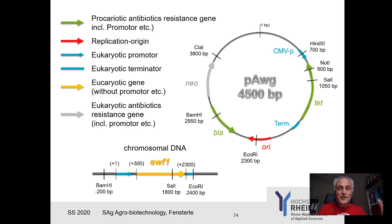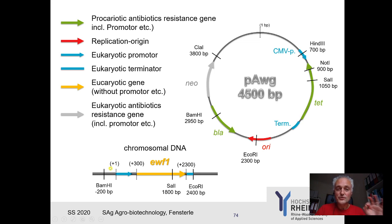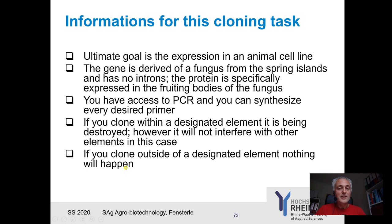People usually start thinking about which restriction enzyme to use — BamHI, EcoRI — but that's not how you start. The first question is: can I use the promoter of my chromosomal DNA? In other words, I want expression in an animal cell line — is this promoter functional? If the response is no, you cannot use this promoter. Now you have to go back to the exercise: it says the gene is from a fungus, which is of course a eukaryotic cell line.